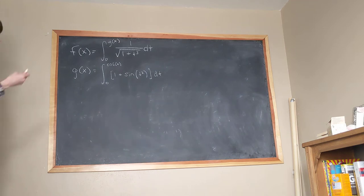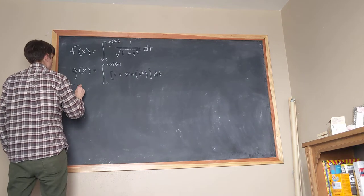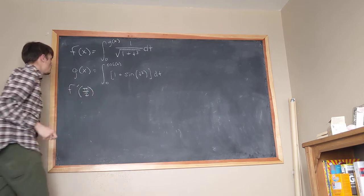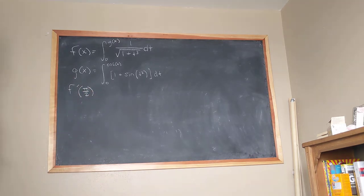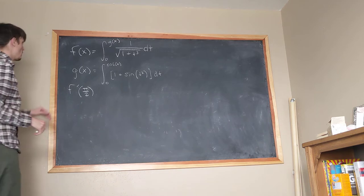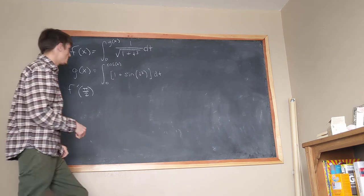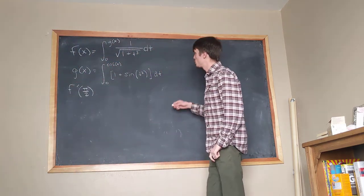Looks a bit daunting, and we're tasked with finding f prime of pi over 2. How are we going to do that? Well, we're just going to start from the basics. So we're going to start with f, just take its derivative and see what we're going to need to find to calculate f prime of pi over 2.